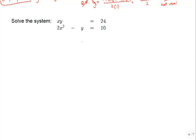Elimination won't work here because there are no matching terms—we have a product xy and a mixture of terms. Substitution is the better strategy. Solving the top equation for x or y would introduce fractions, so instead we solve the second equation for y: subtracting 10 and adding y gives y equals 2x squared minus 10, which avoids fractions.